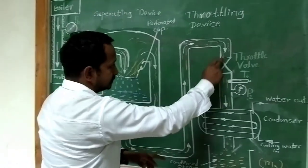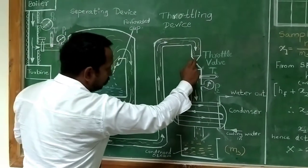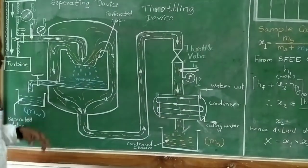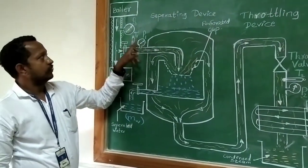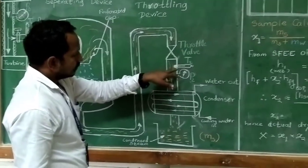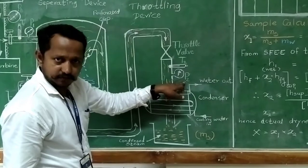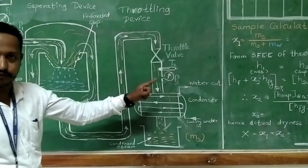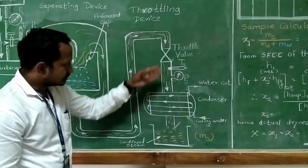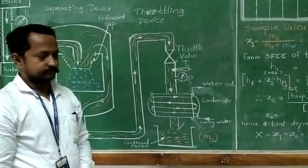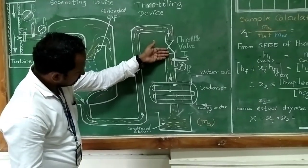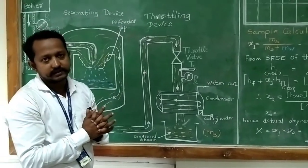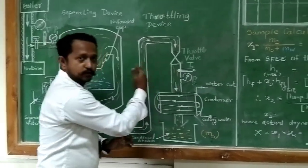When this steam is given to the throttle valve, the pressure, when the steam is passed through this throttle valve, the pressure gets dropped suddenly and it becomes P2, where the pressure before throttling is already measured as P1 or Pb. Now, at the same time, when we are measuring pressure P2, we are also measuring the temperature T2. According to these properties — pressure P2 and temperature T2 — we come to know the steam after throttling is entering the superheated region. So, one can say the steam coming out of the throttle valve is superheated steam. We know the steady flow energy equation for a throttling device: enthalpy before throttling is equal to enthalpy after throttling.